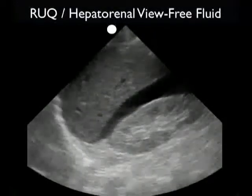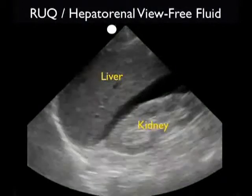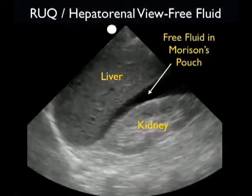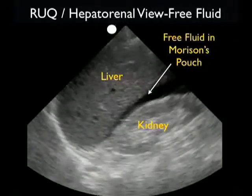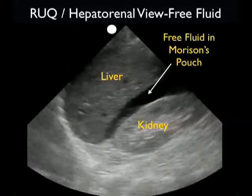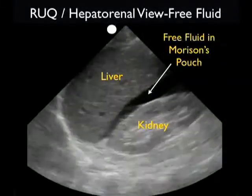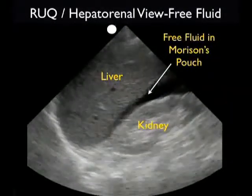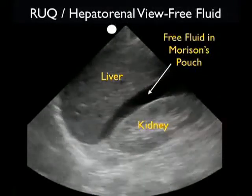Here's a positive ultrasound examination from a patient who was hit by a car while crossing the street. We see the liver in the middle of the image, and notice the kidney located inferior and posterior to the liver. In between the liver and the kidney in that potential space known as Morrison's pouch, we see a dark or anechoic fluid collection — not insignificant, actually a pretty large stripe in this patient. This represents the positive examination, or the presence of fresh fluid — in this case, blood — within Morrison's pouch.